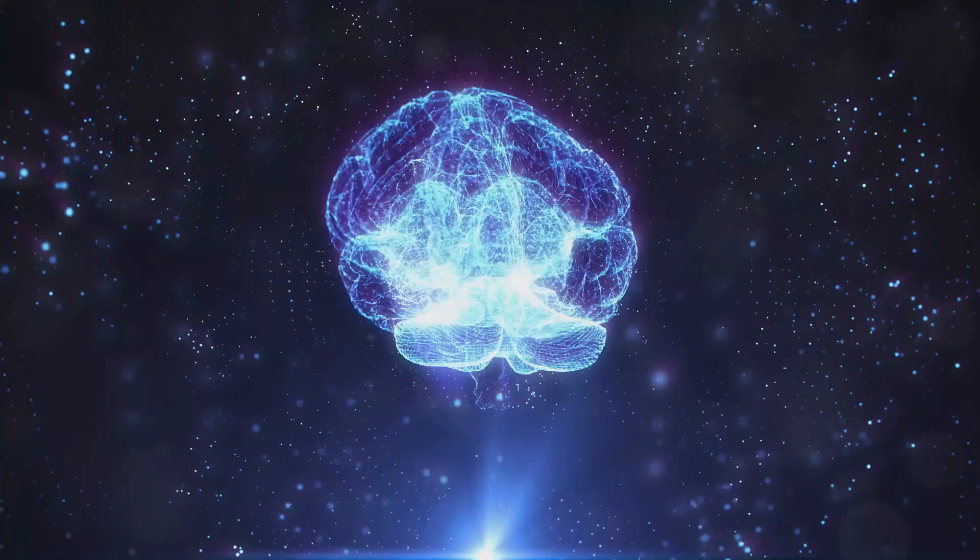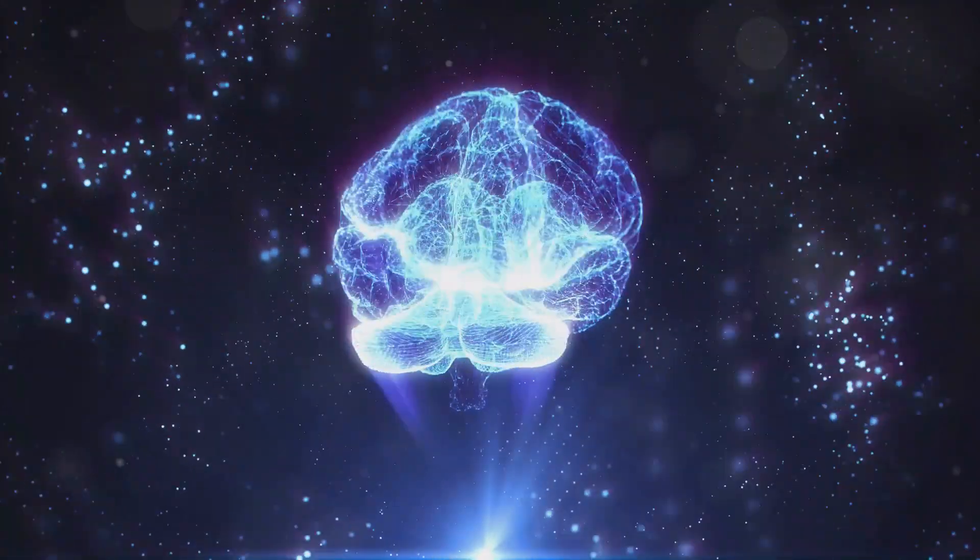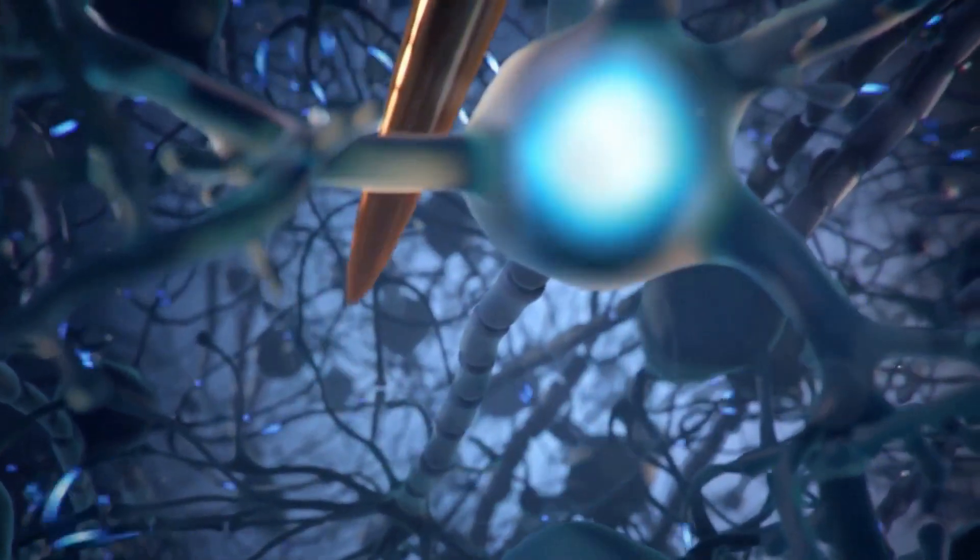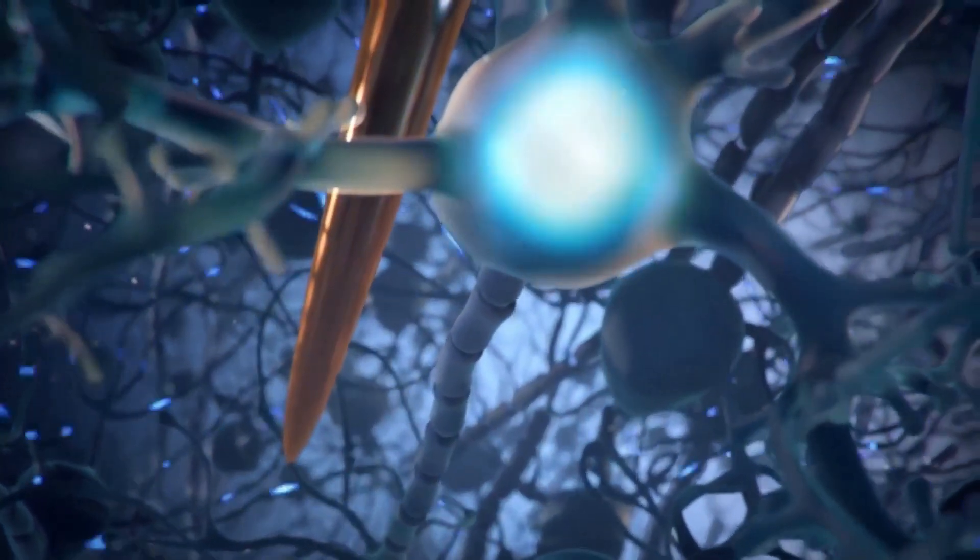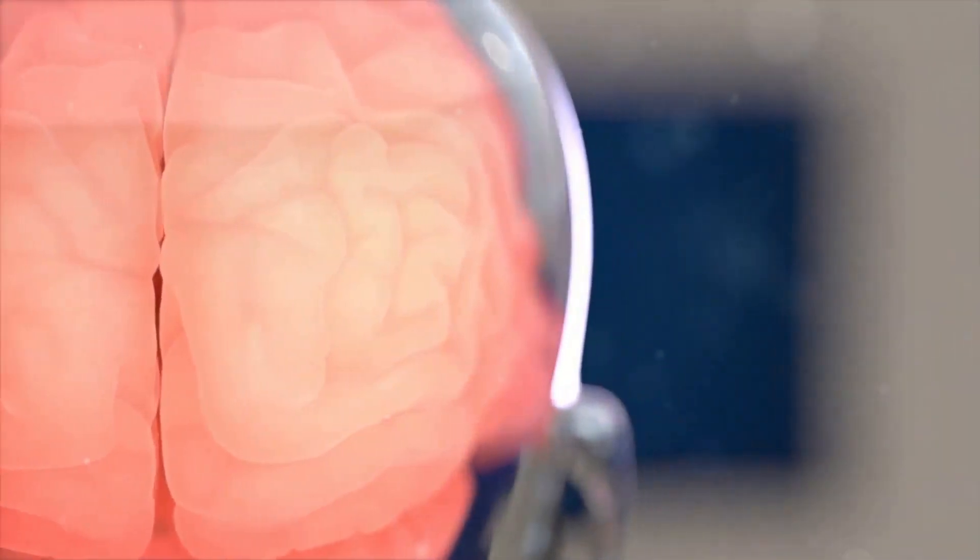However, the journey has not been without hurdles. Musk acknowledged that some electrodes in Arbor's implant retracted after surgery, reducing their effectiveness. Musk explained during the live stream some of the fine electrode-carrying threads that were woven into his brain tissue retracted after the surgery.